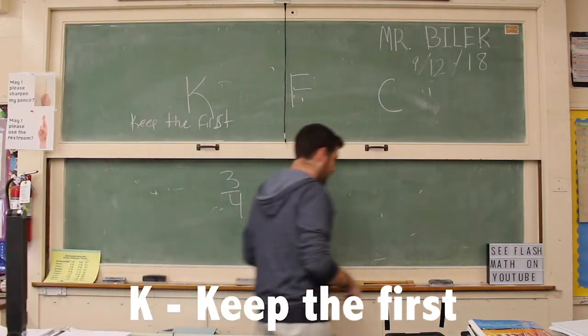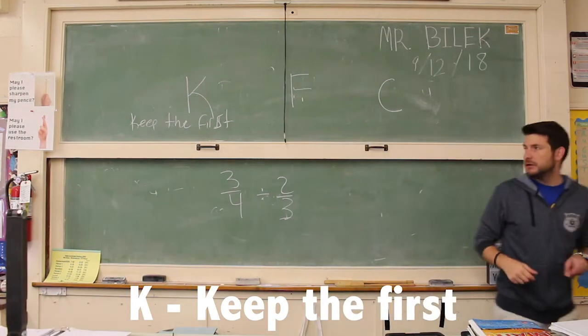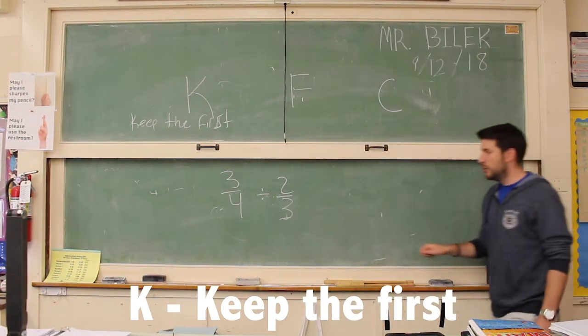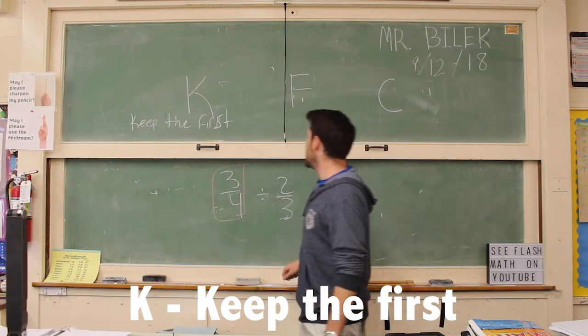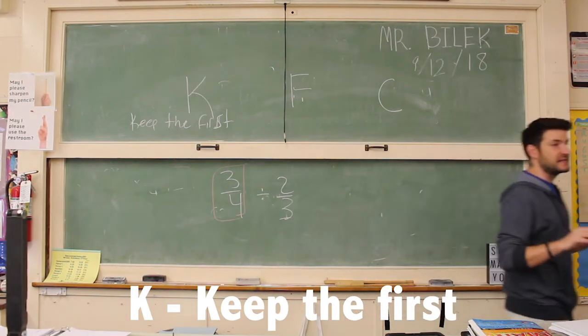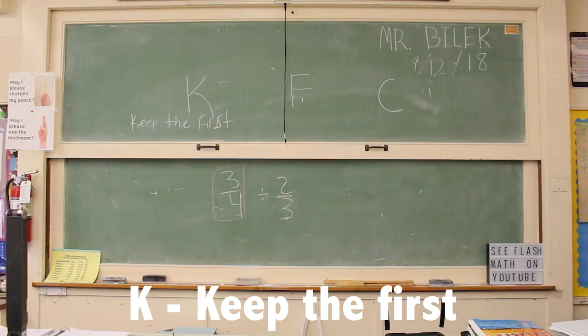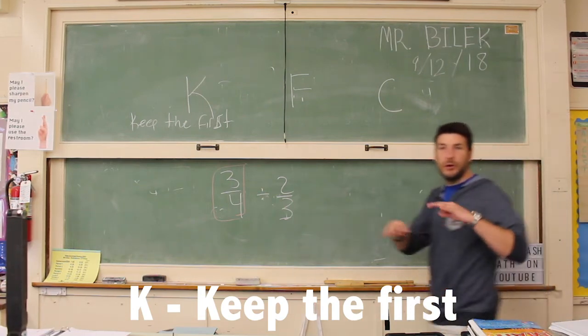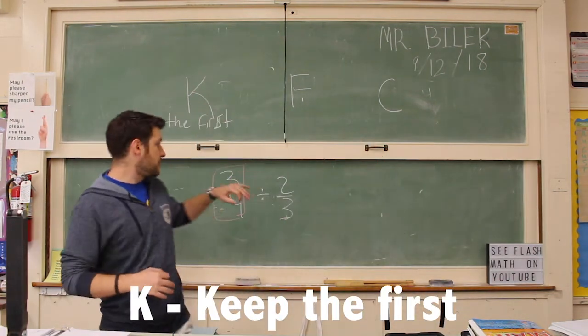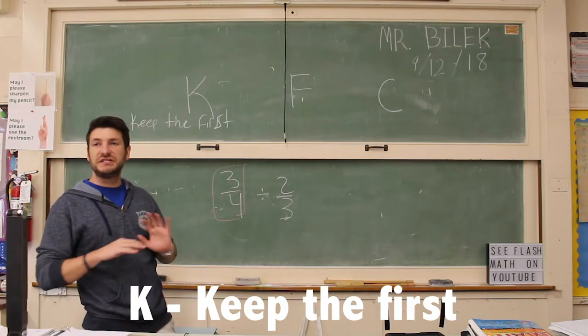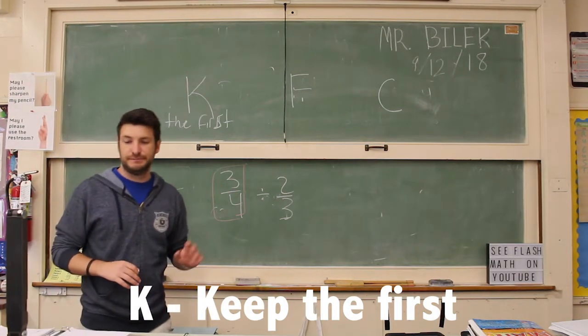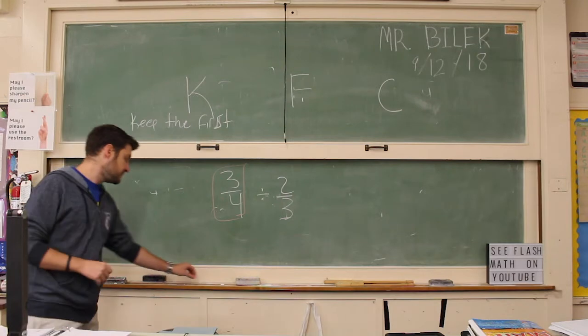And the K stands for keep the first. When we set up a problem just like we did, keep the first, we want to take our first fraction, this guy right here, and we want to keep it the exact same. We don't want to do anything to it. We have three things here: two fractions and a division sign. Keep the first fraction the exact same. Don't do anything to it. That's what the K stands for. Keep the first.